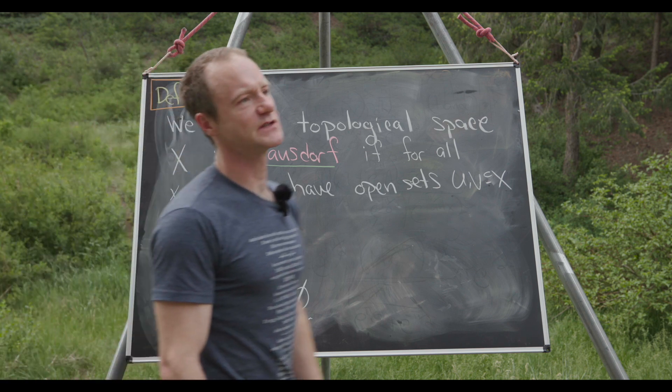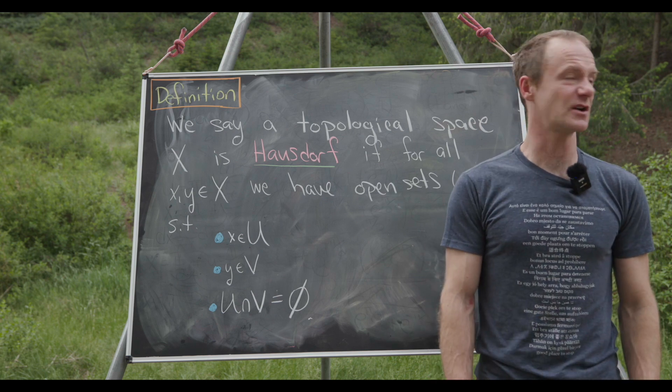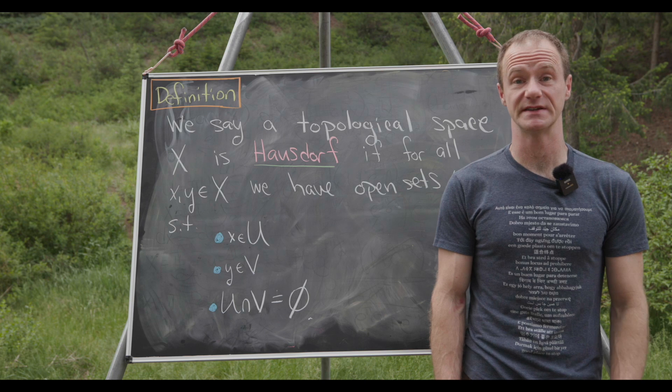I think maybe to build some intuition for this definition you could look at a pretty nice picture. Looking at this picture, which is probably drawn as a plane or two-dimensional space, it seems pretty clear that you can find open sets around x and y that do not intersect. And as we'll see moving forward, this doesn't hold for all spaces.